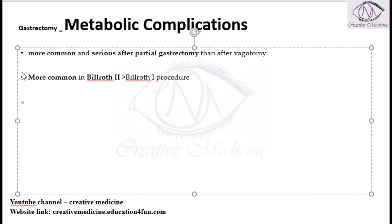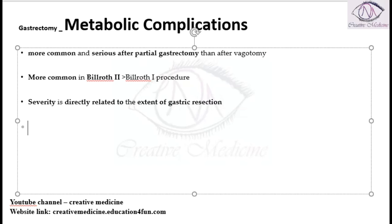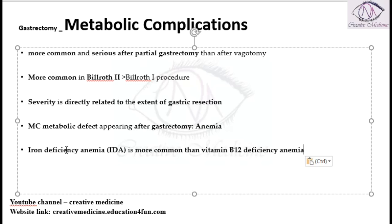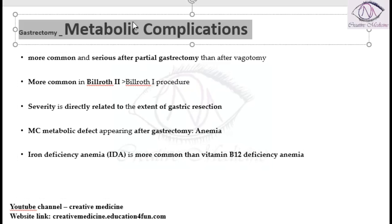The severity of metabolic complications is directly related to the extent of gastric resection — the more gastric resection you do, the more severe is the disease. The most common metabolic defect after gastrectomy is anemia. Iron deficiency anemia is more common than vitamin B12 deficiency after gastrectomy.